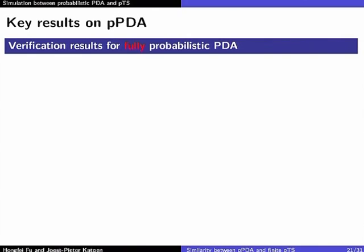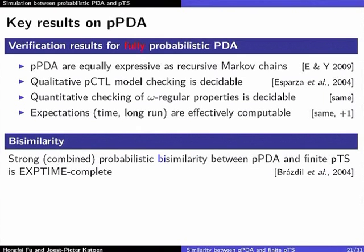Key results on fully probabilistic PDAs: they are equally expressive as recursive Markov chains. Qualitative PCTL model checking is decidable. Quantitative properties of omega-regular properties are decidable, and expectation values can be computed. For bisimilarity, Brazdil, Kuchera and co-authors showed strong probabilistic bisimulation between a probabilistic PDA with non-determinism and a finite PTS is EXPTIME-complete. We show probabilistic simulation lies in the same complexity class, which is not the case in the non-probabilistic setting.